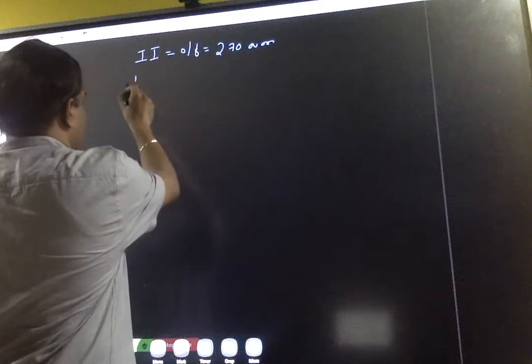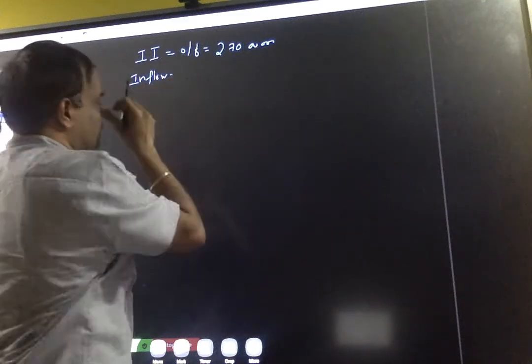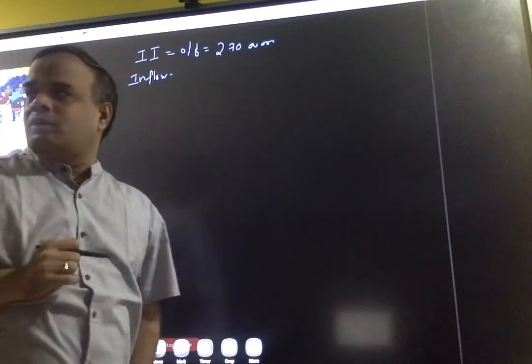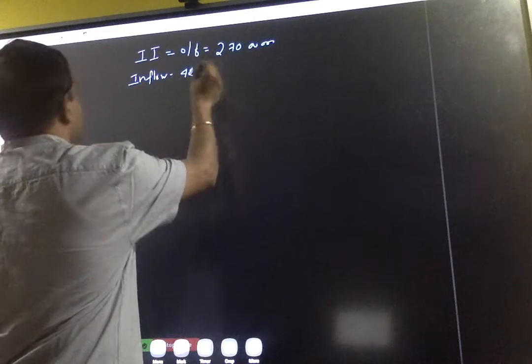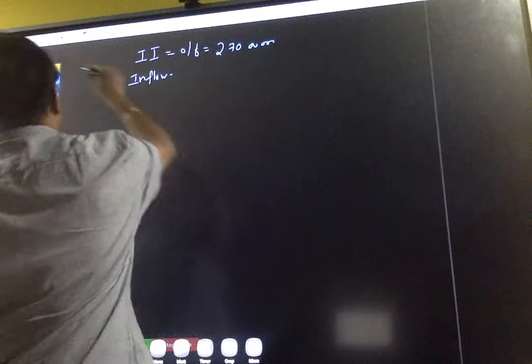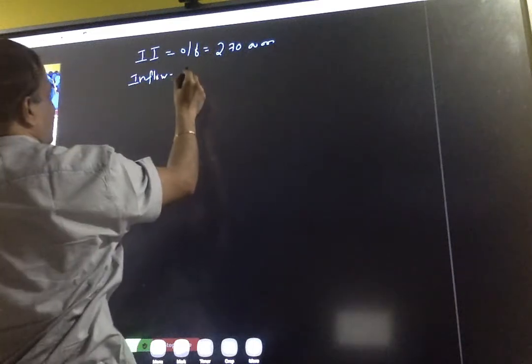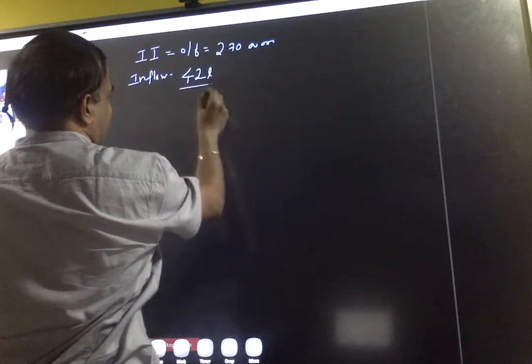Whereas inflow comes to how much? The inflow in this question is 42 lakhs per annum, am I right? Total outflow is 270 lakhs, and each and every year we are getting inflow of 42 lakhs per annum.